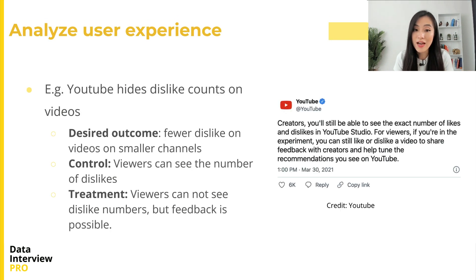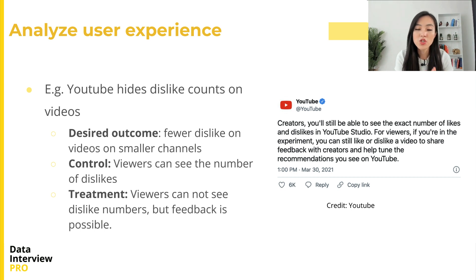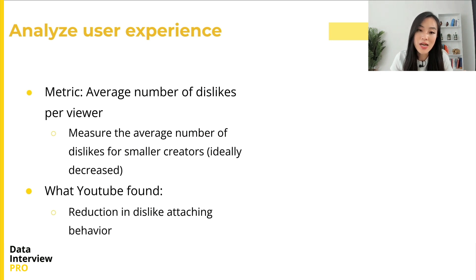For the YouTube example, the desired outcome is fewer dislikes on videos on smaller channels. In the experiment, YouTube assigned viewers to different groups. The control group could still see the count of dislikes for a video. In the treatment group, viewers could still dislike a video to share feedback with creators, but they were not able to see the dislike counts. Given this difference, one metric is the average number of dislikes per viewer, which indicates if a user gives more or fewer dislikes. We can also measure the average number of dislikes for smaller creators — ideally, we will see a decrease in this number.